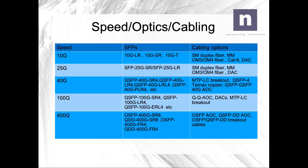The 10GB and 25GB SFPs look very similar. For 25GB cabling, you can use single-mode duplex fiber, multimode OM3 or OM4, or DAC cables. For 40GB, the naming is slightly different: you could have QSFP 40GB SR4, QSFP 40GB LR4, QSFP 40GB universal optics, LRL4s, or PLR4s. For cabling, you could use MTP-to-LC breakout cables or QSFP-to-4 twinax copper breakout cables.